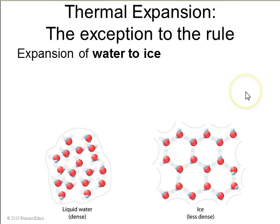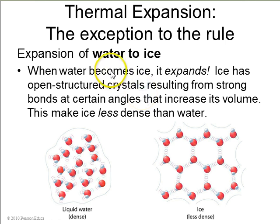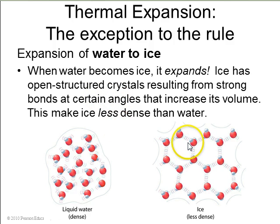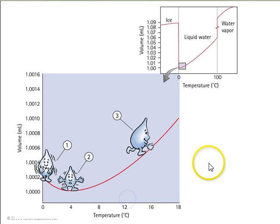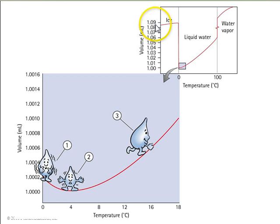There is one exception to the rule of thermal expansion. Normally you heat something up and it expands, but the exception is when water turns to ice. When water becomes ice, the temperature goes down but it expands — the volume goes up. That's because of the water molecule's open crystal structure, resulting from strong bonds at certain angles. This makes ice less dense than water. Hewitt shows a graph of the volume of one gram of H₂O versus temperature.